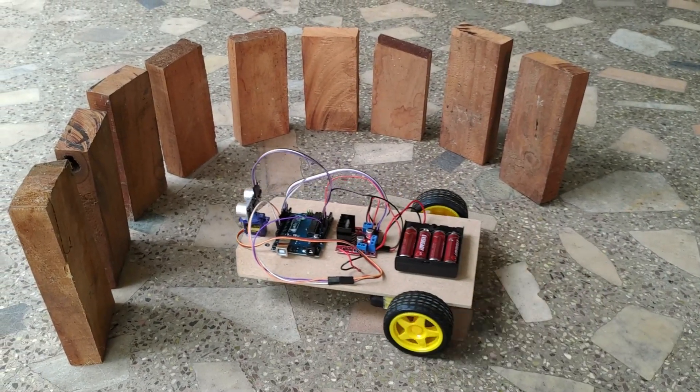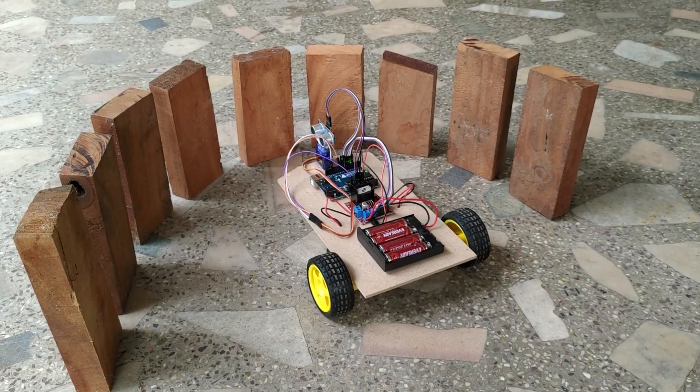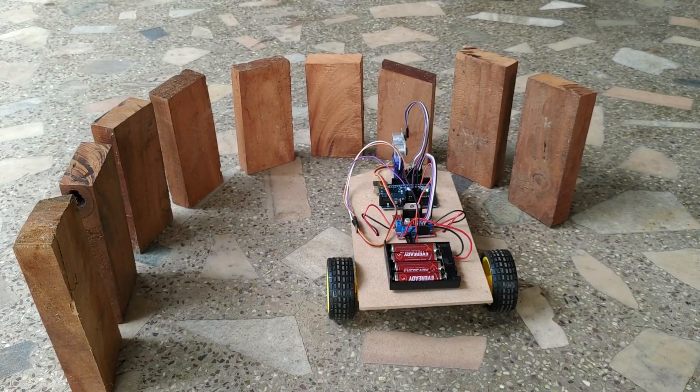On detecting the obstacle, the robot slightly moves backward, changes direction and again continues to move forward, thus avoiding the obstacles.